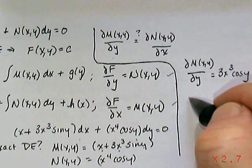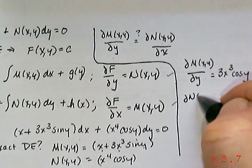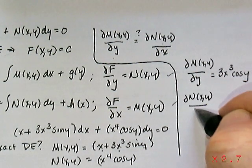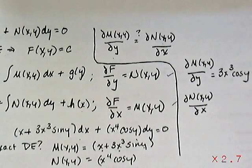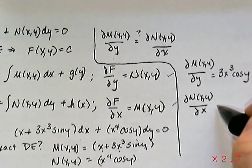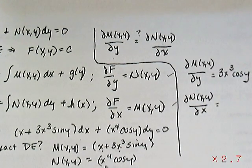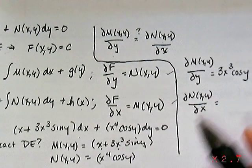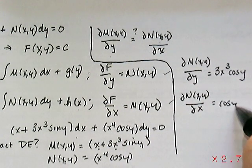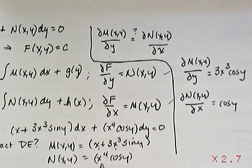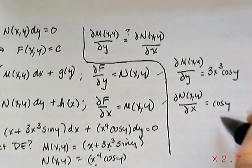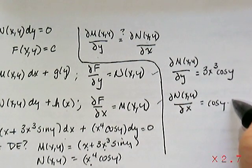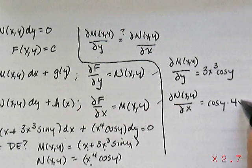Same thing if we computed the partial of the N function with respect to x. What would we get? Well, if you're doing this with respect to x, then the cosine y acts like a constant. So that will be cosine y times the derivative of x⁴, which we know is to be 4x³.